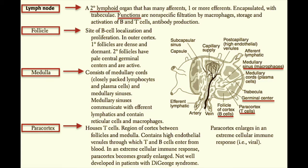Let's begin with lymphoid structures. The first structure we will review is the lymph node. The lymph node is a secondary lymphoid organ that has many afferents and one or more efferents. It is encapsulated and has trabeculae traversing through the cortex and medulla of the lymph node.